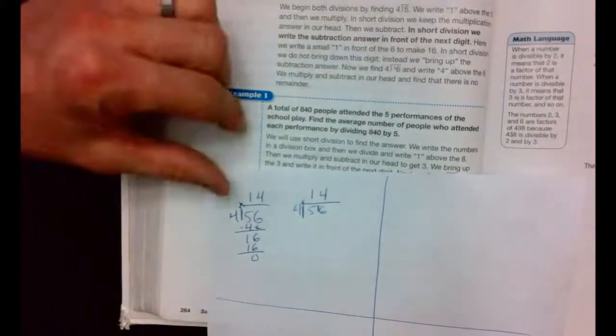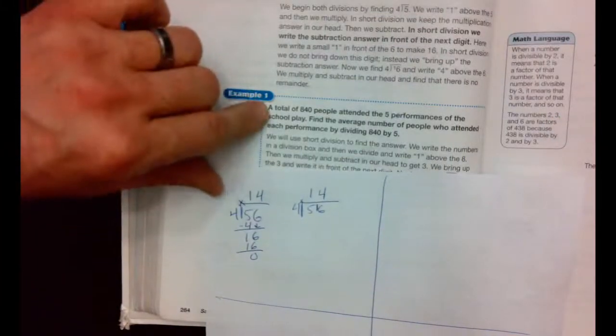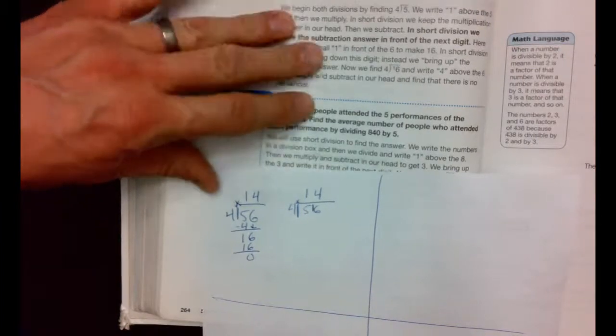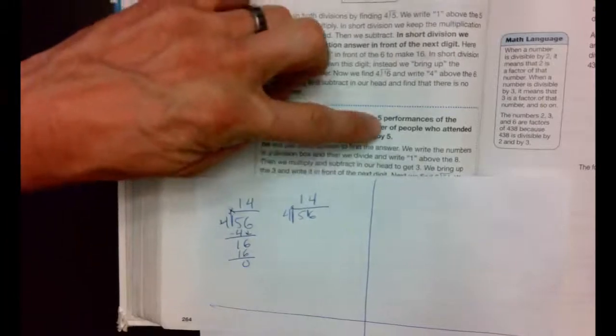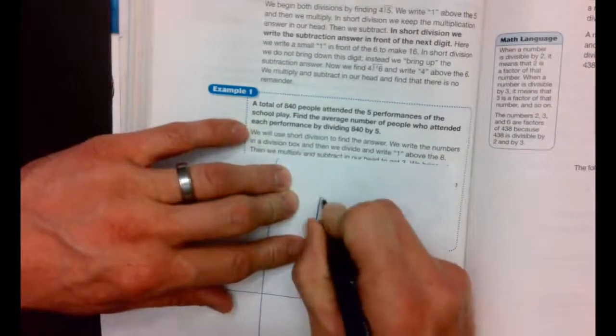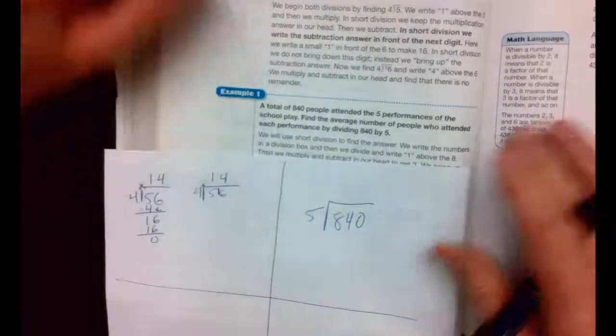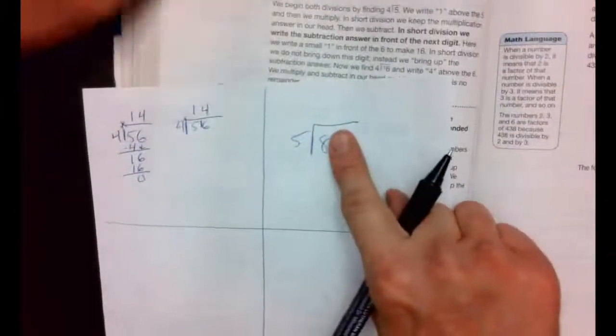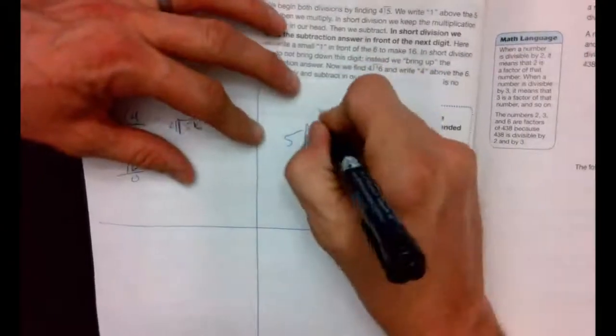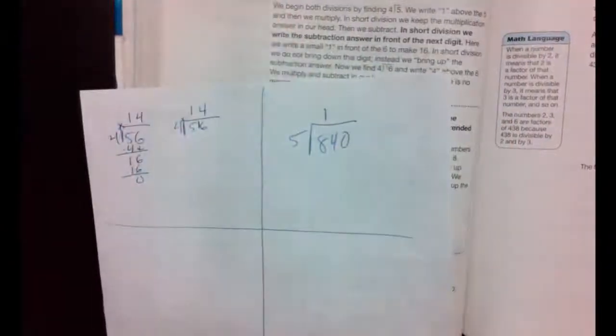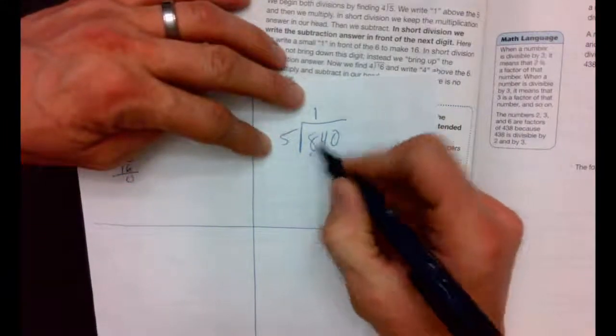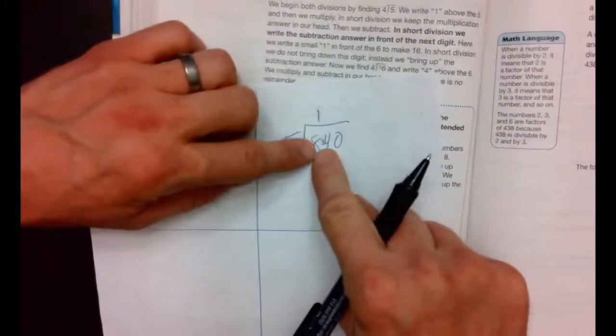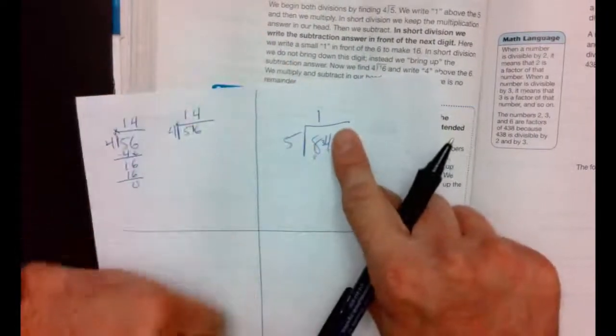A total of 840 people attended the 5 performances of a school play. Find the average number of people who attended each before by dividing 840 divided by 5. And try to use short division. How many times does 5 go into 8? 1 time. 1 times 5 is 5. Now you have to subtract in your brain. 8 minus 5. Now some kids last year put it here so they could see it. 8 minus 5 is 3. Now write the 3 right in front of 4 because you're 34.